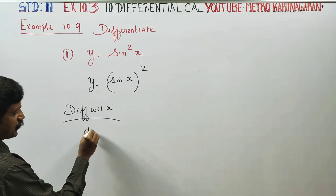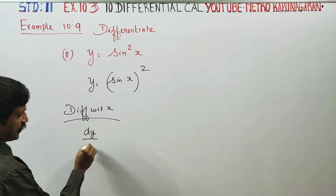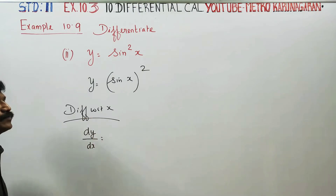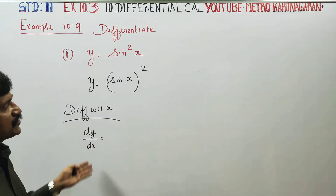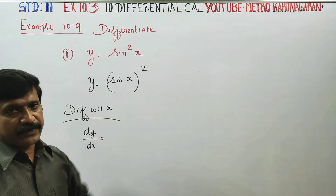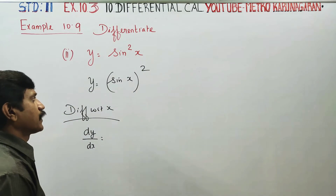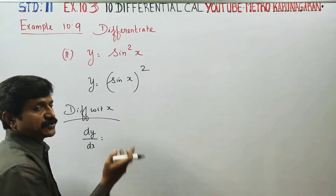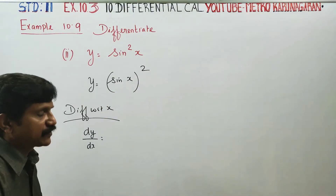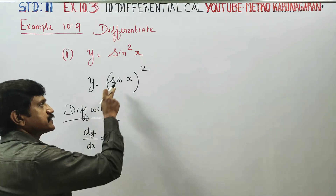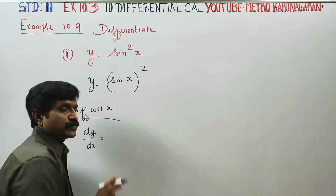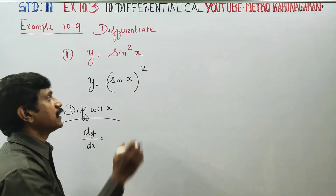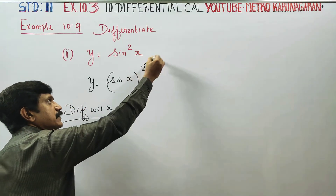Differentiating with respect to x, dy by dx is equal to. Sin x directly differentiate — we need to differentiate sin x. Sin x differentiate.